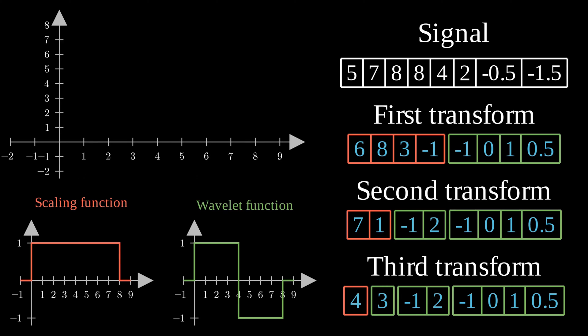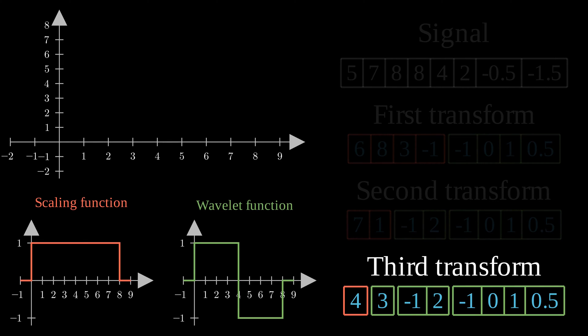We will start from the deepest transformation we computed. First of all, we need to get our approximation space back. So we take the scaling function and we place it on the graph. As the coefficient we've got in the approximation space is 4, we scale our function by 4. This is the first stage of our inverse transformation.